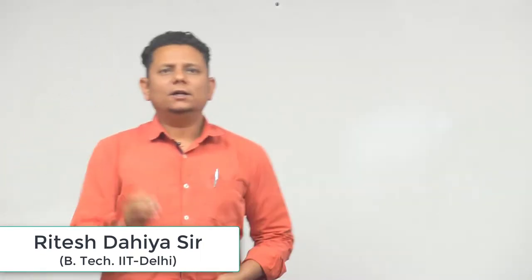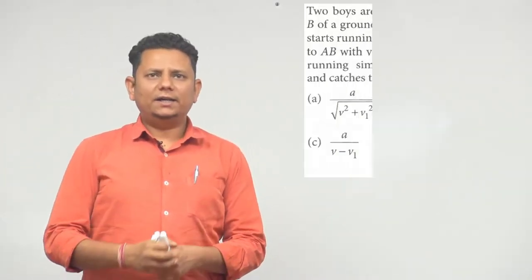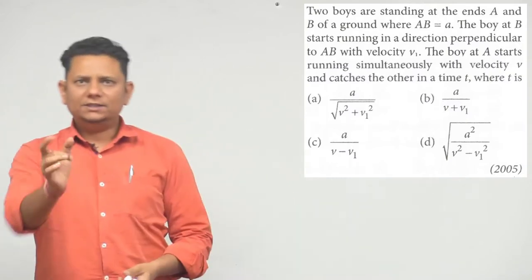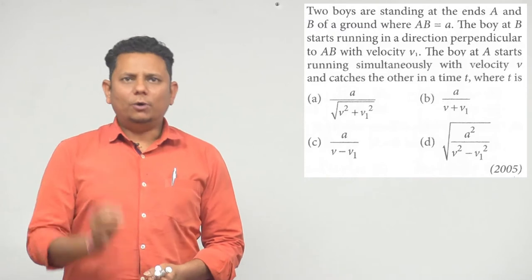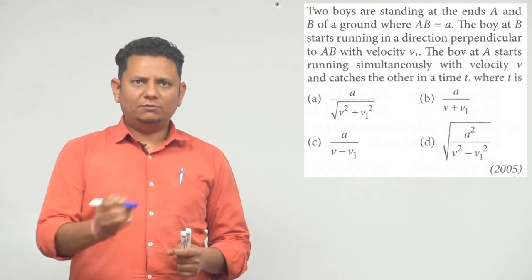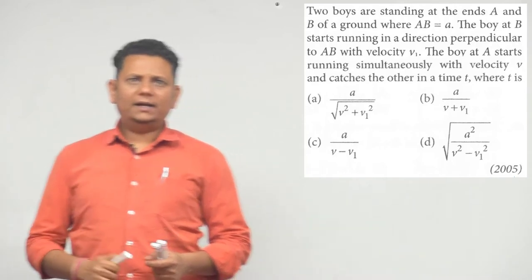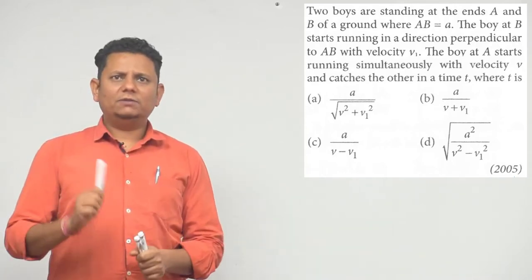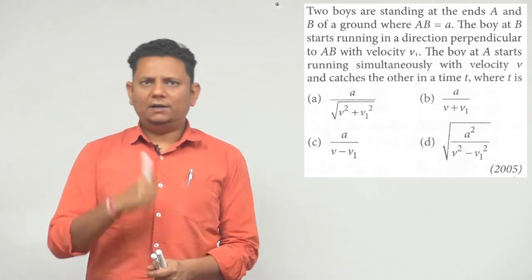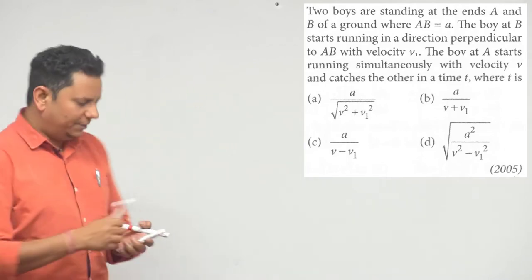Next question. Two boys are standing at the ends A and B of a ground where AB is equal to A. Boy at B starts running in a direction perpendicular to AB with velocity V1. Boy at A end starts running simultaneously with velocity V and catches the other in time T, and we need to find what is the value of T.